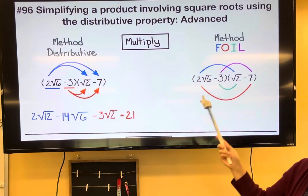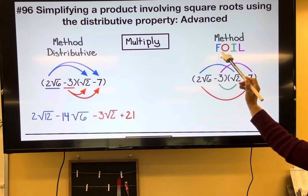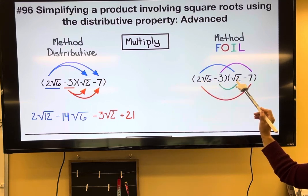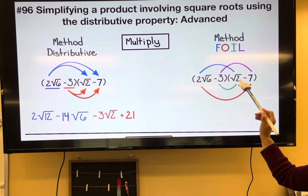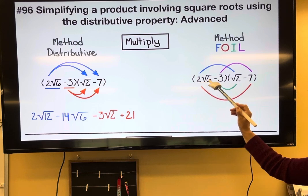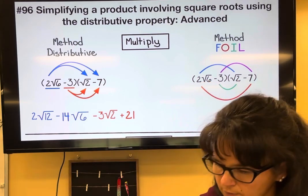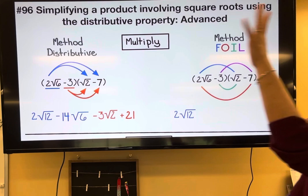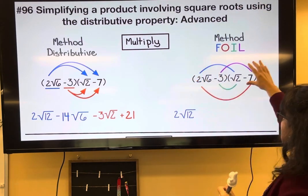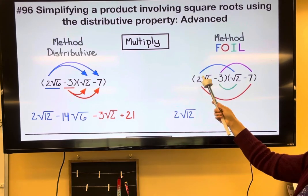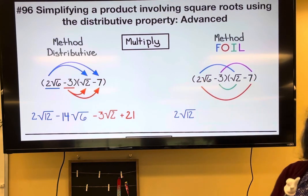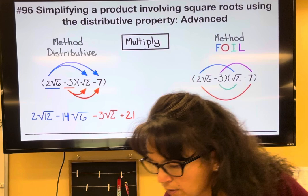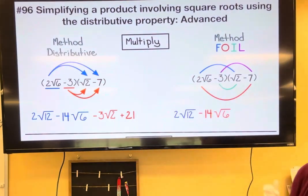Instead of distributing term by term, let's use FOIL. Multiply the First terms: 2 root six and root two are in the front, so 2 root six times root two gives two root 12. Then multiply the Outer terms: 2 root six and negative seven are on the outside, so positive times negative is negative, and two times seven is 14, giving us negative 14 root six.